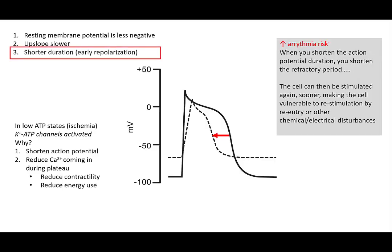And finally, the last part is the shorter duration of the action potential. So back over here in low ATP states, which is what's going on with ischemia, these potassium ATP channels become activated. They are not normally activated, but they become activated in these ischemic states. Why? Because they're trying to shorten the action potential. They do that because it's to reduce calcium coming in during the plateau.